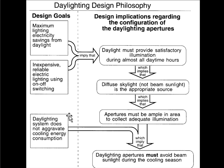A third factor is we want the daylighting system to not aggravate the cooling energy consumption. In most commercial buildings where we're designing for daylighting, the second most important load behind lighting electricity is cooling electricity. So one of the things we don't want to do is aggravate the cooling loads. Those are some design goals, and now we can talk about design implications and what those might mean in terms of the configuration of the daylighting apertures.